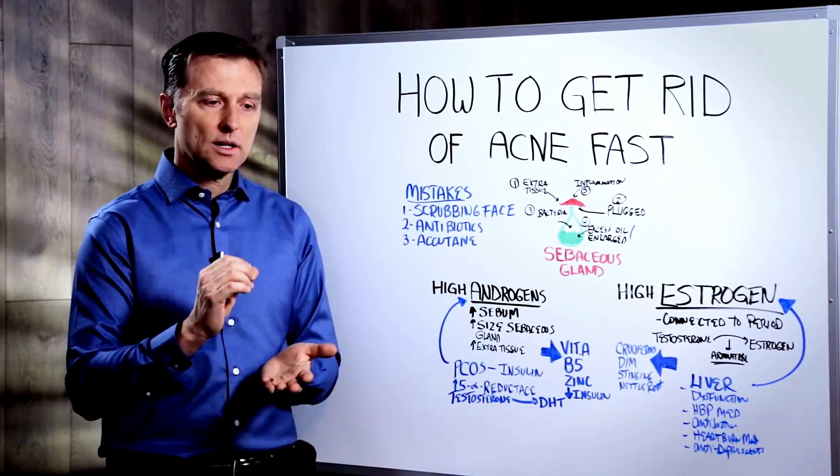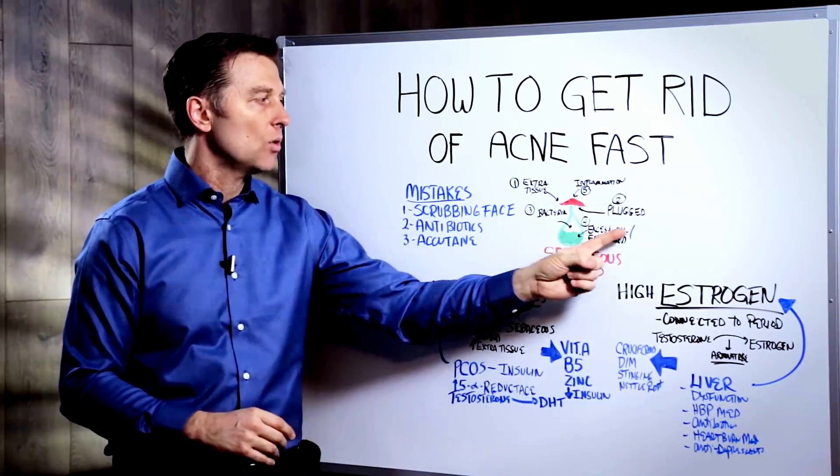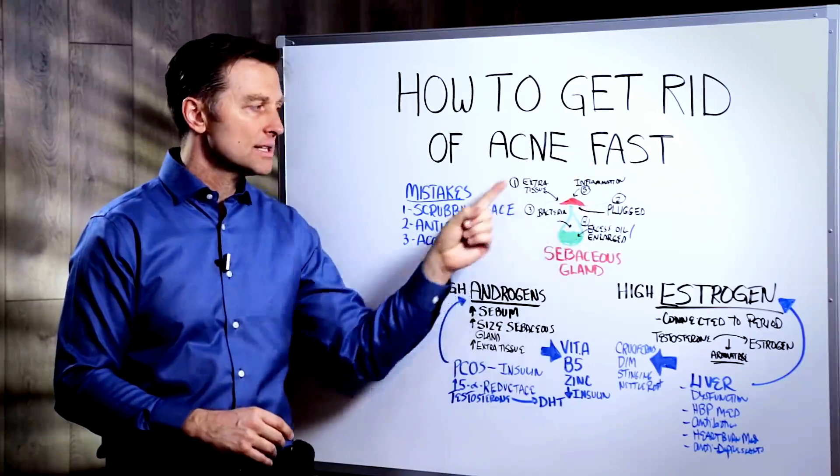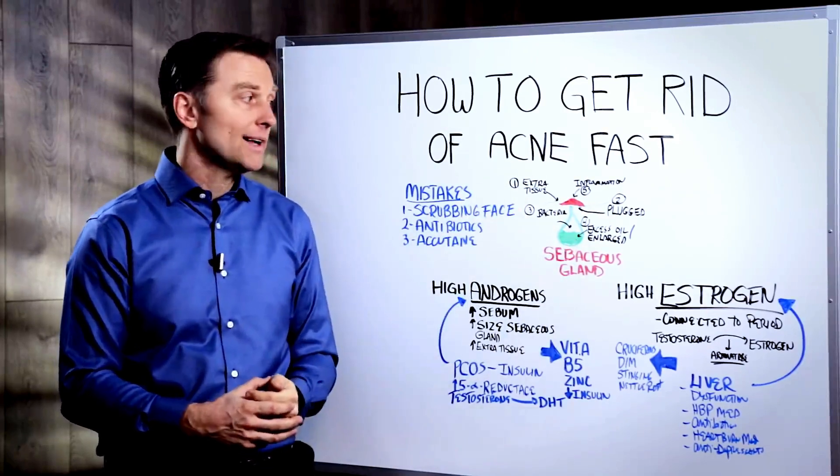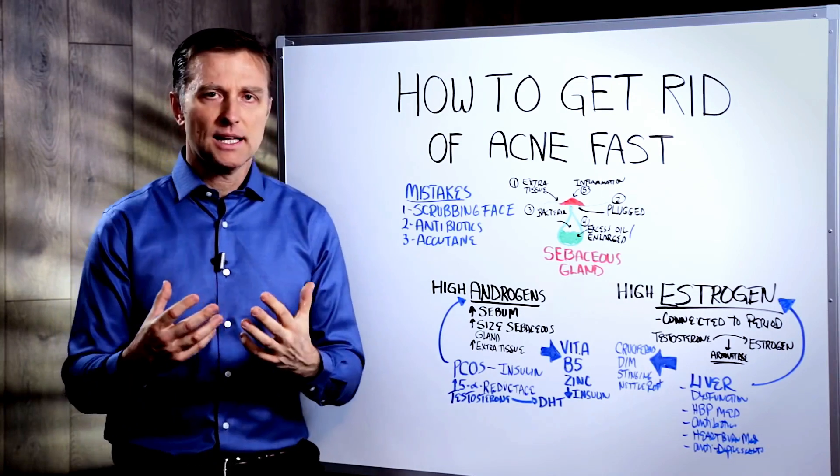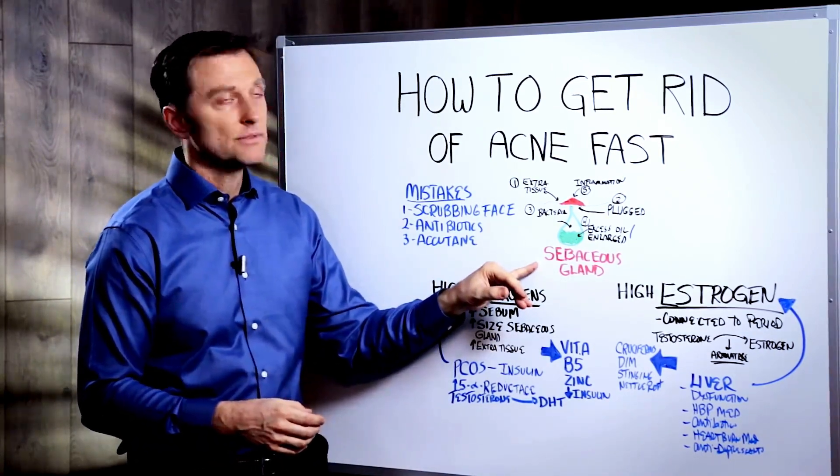You have unfriendly bacteria in there that are feeding off the oil, and that oil is called sebum. That's like the waxy, oily thing that's supposed to lubricate the skin. So you have excess oil or sebum, and then you have an enlarged gland. All these things are happening, and that's really what acne is. It's not just one thing. So my whole thing is let's get deeper. Let's see what we can do to correct the original reason why it's there in the first place.